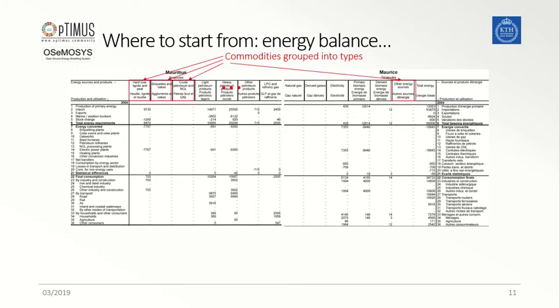First of all, on the top bar of the table, it is possible to identify the different energy commodities available, grouped into types of commodities.